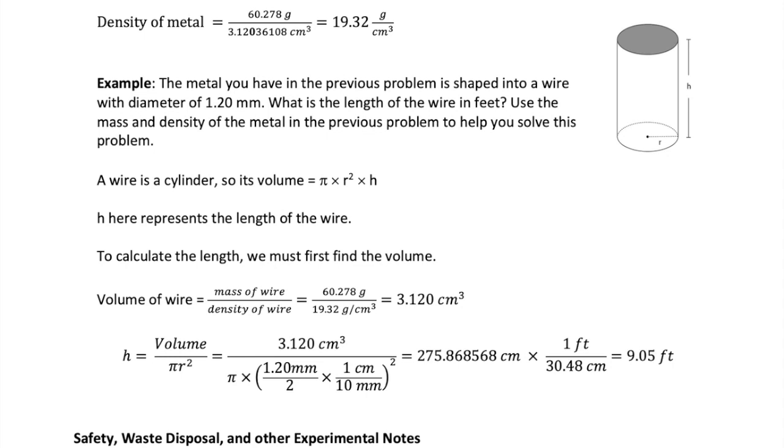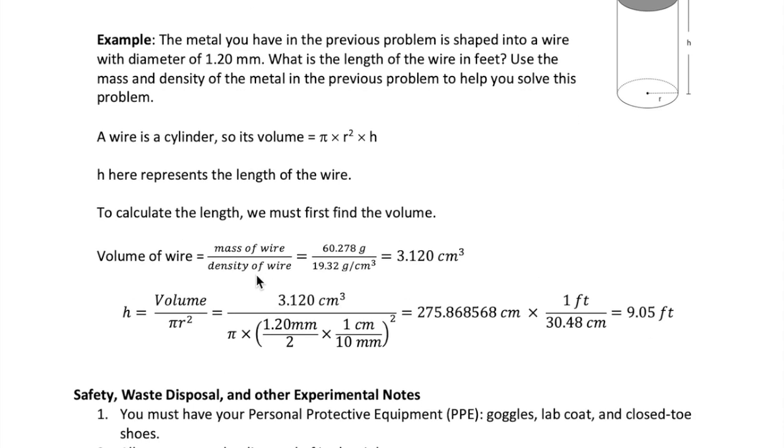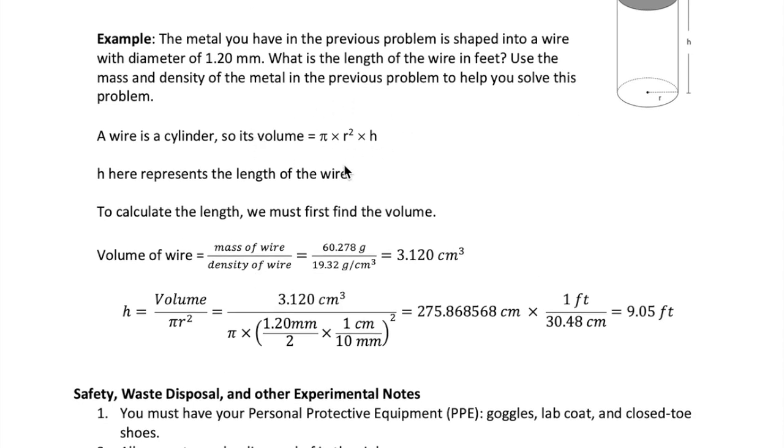So first, let's get the volume, which we can do by dividing mass of the wire by its density. We have these values from our experimental data, so the volume is going to be 3.120 cubic centimeters. Now we rearrange the volume equation to solve for h, which is just volume over pi r squared. And then there's a couple of operations here that you need to do, because what we're given is diameter, not radius. So we have to divide it by 2 to get radius.